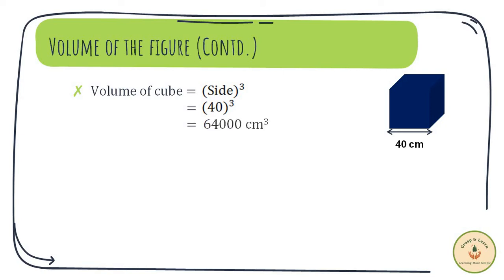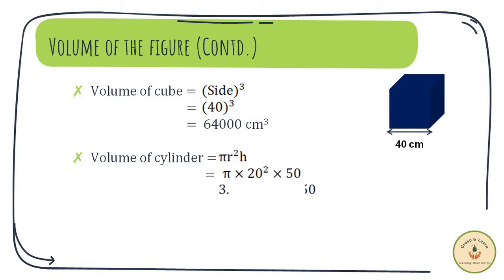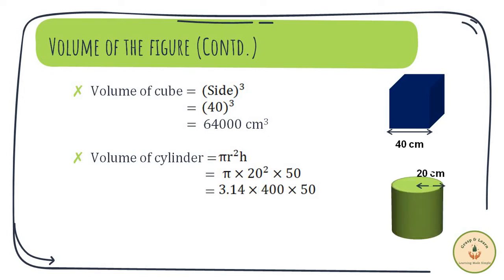Remember, the unit of volume is in cubic centimeters. The volume of a cylinder is equal to πr²h, where r is the radius of the base of the cylinder and h is the height of the cylinder. Substituting the values, we get volume of this cylinder equal to 3.14 × 20² × 50, where 20 is the radius and 50 is the height. When calculated, we get the answer as 62,800 cm³.